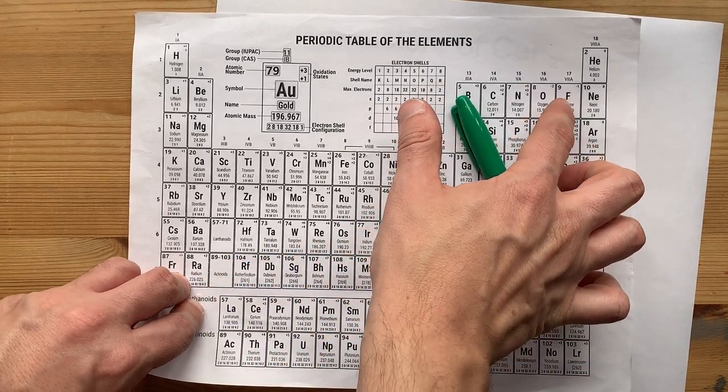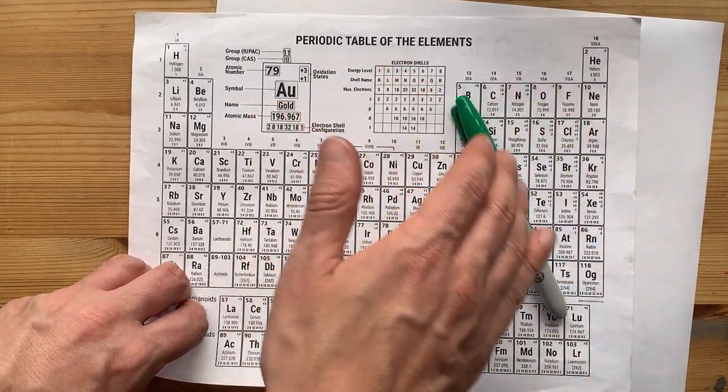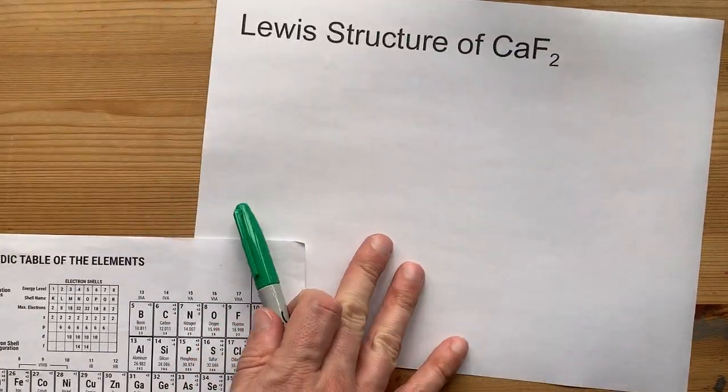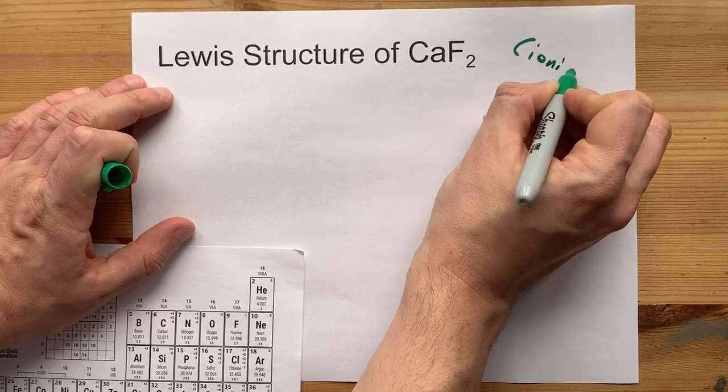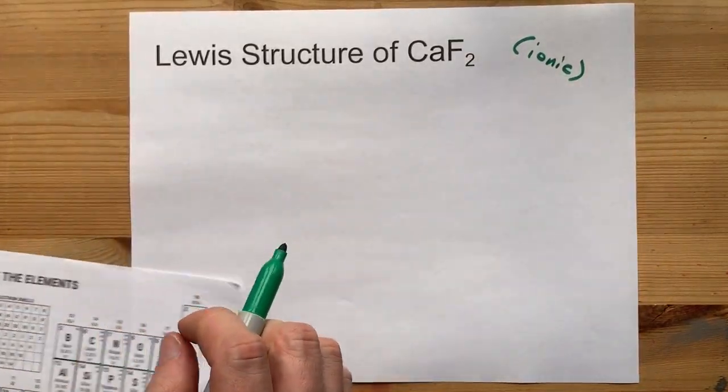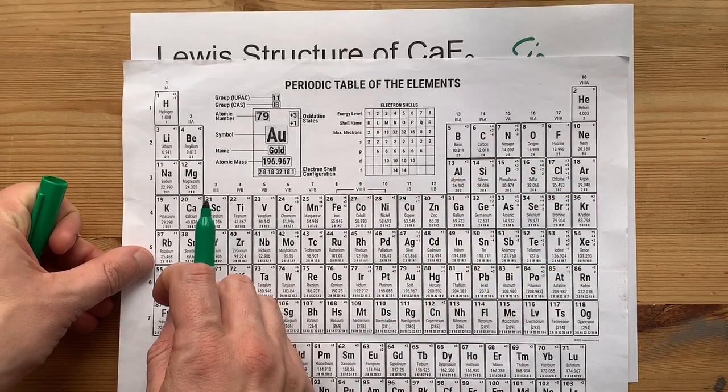Fluorine is a non-metal. It comes from the right-hand side of the staircase. A metal and a non-metal together will combine to make an ionic compound. Great. Now, let's see how that might happen.